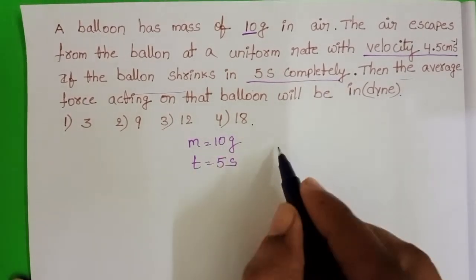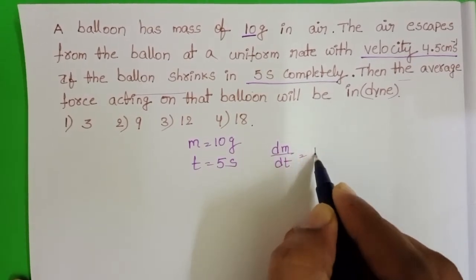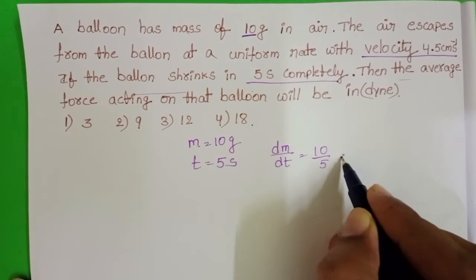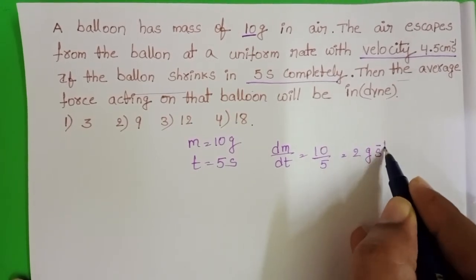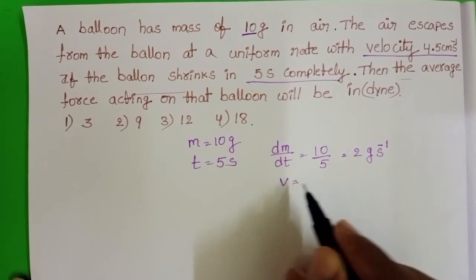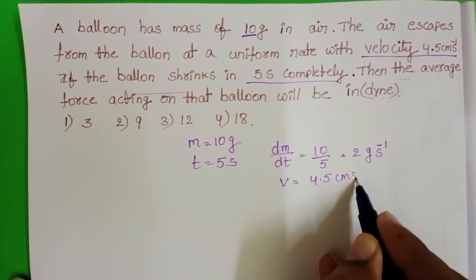Here mass is a variable quantity. dm/dt equals 10 divided by 5, that is equals to 2 grams per second, and velocity is constant, that is 4.5 cm per second.